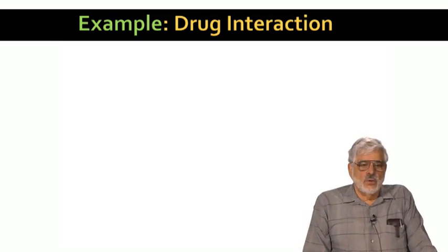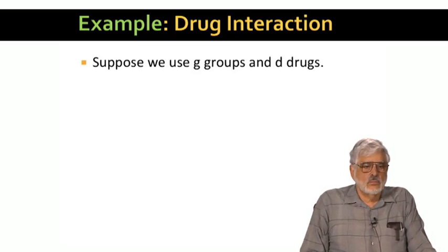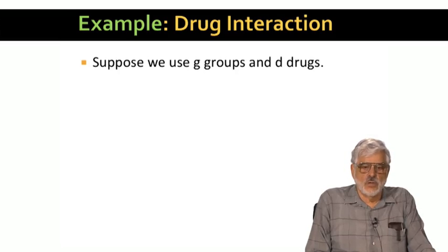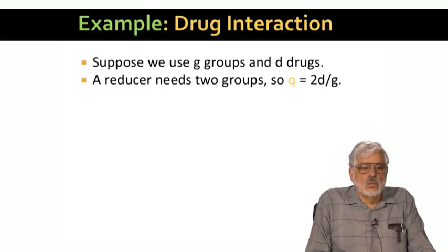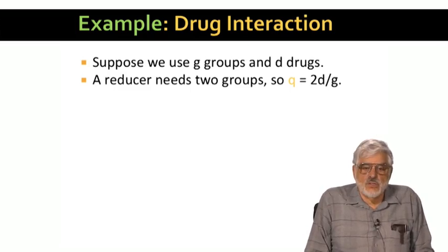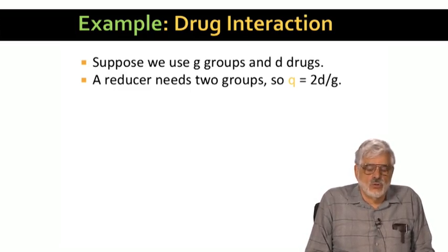Let's see how R and Q relate for the drug interaction problem we discussed earlier. Let d be the number of drugs. In our example, we use d equals 3,000, but there's nothing special about that. Let's also suppose we divide the drugs into g groups of equal size, so each group consists of d over g drugs. A reducer corresponds to a pair of groups, so the number of inputs each reducer needs is twice the number of drugs in a group, or 2d over g.